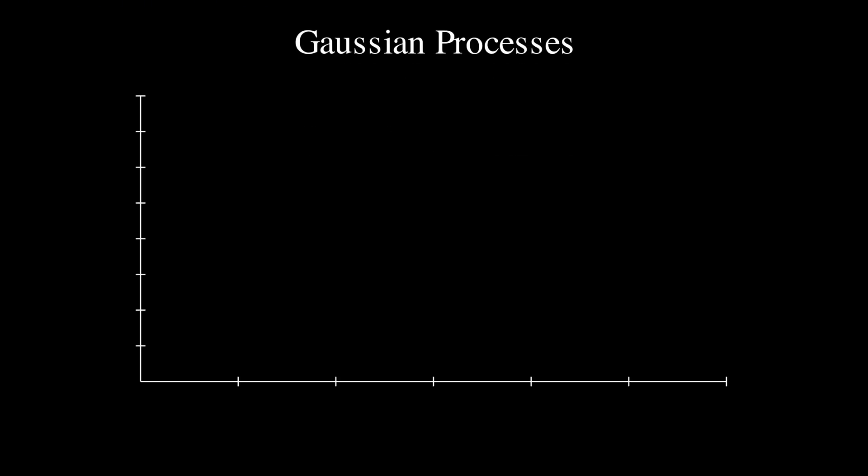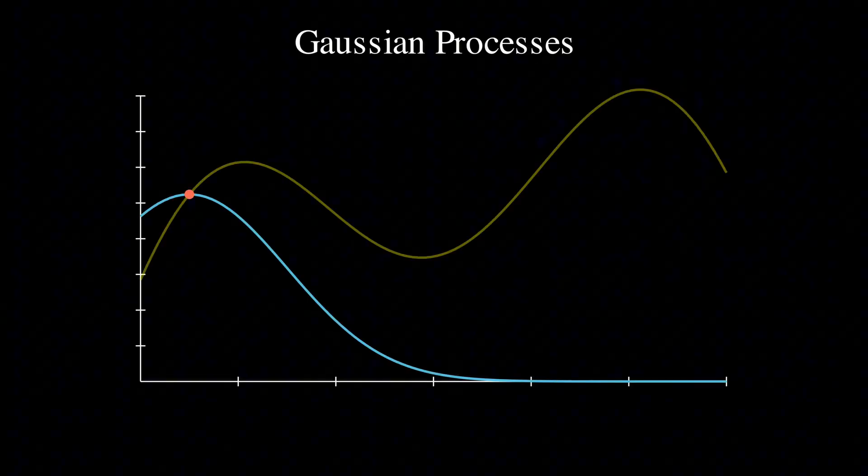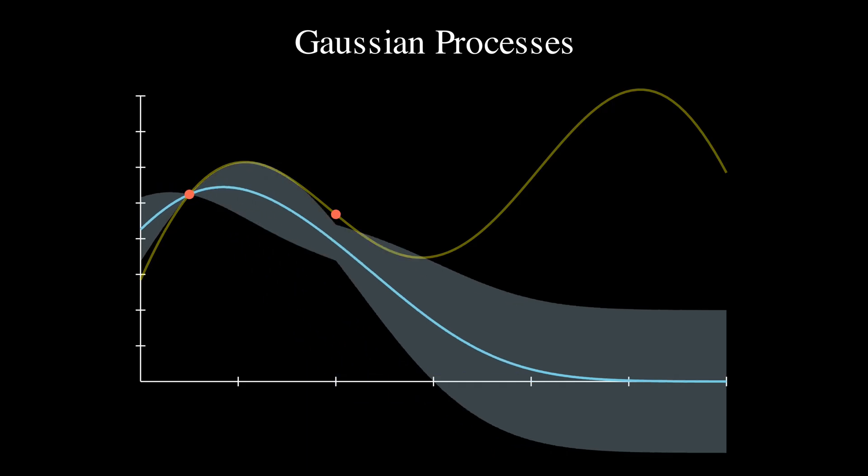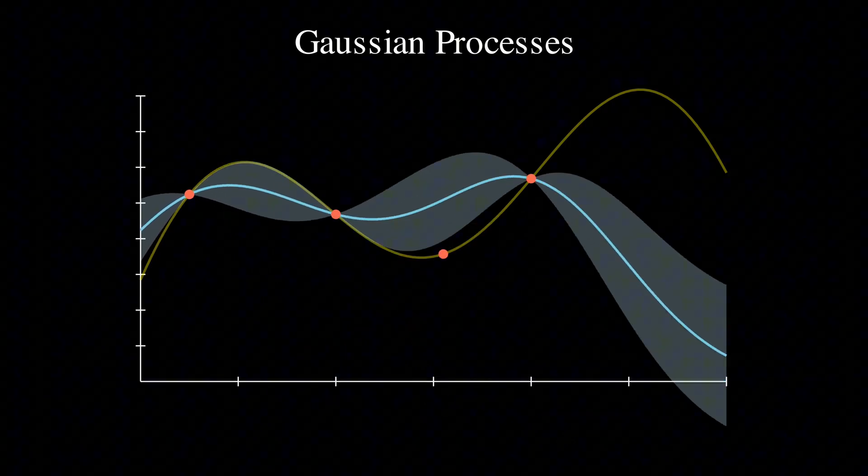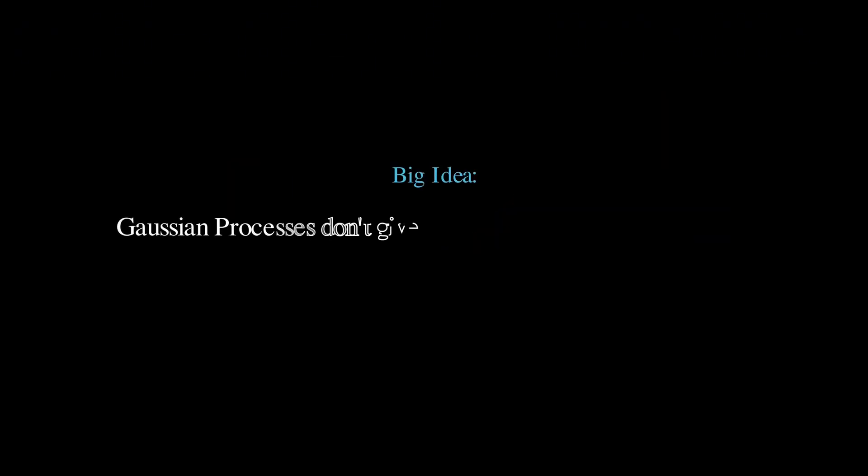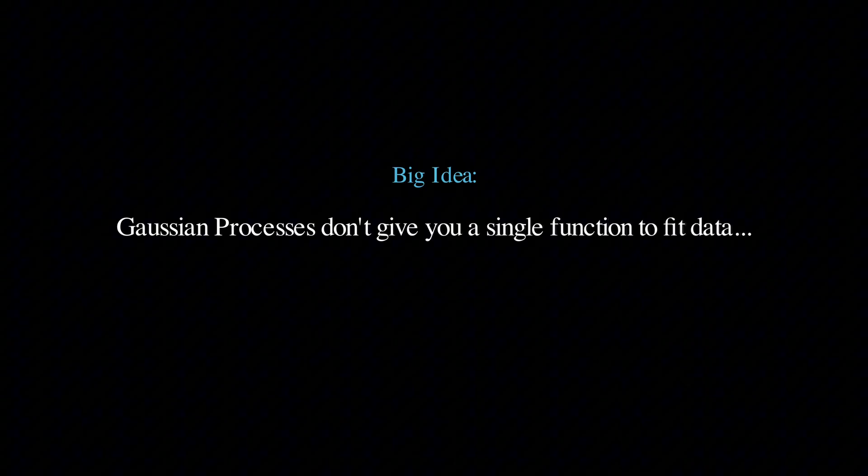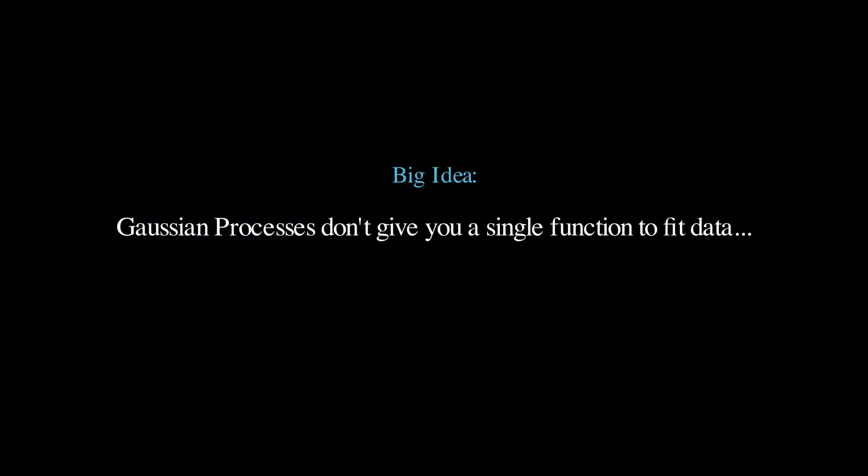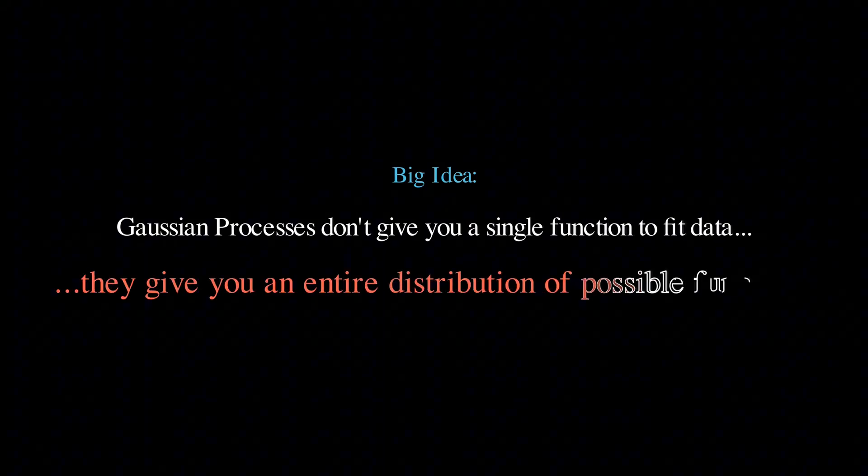Hey there! In this video, we are going to talk about Gaussian processes, which is a super powerful concept that I hope will change the way you think about modeling uncertainty. Let's start with a big idea, which is that Gaussian processes don't just give us a single function to fit our data, and instead, they give us an entire distribution of possible functions.